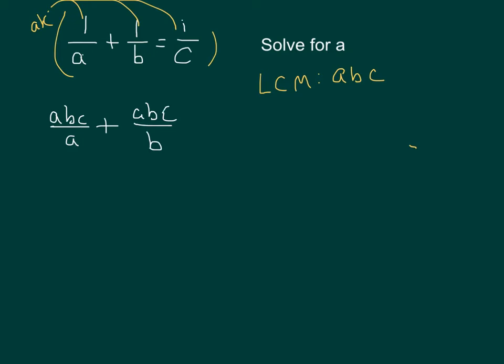In that third term, we multiply that ABC by that last term, and we're going to have ABC over C.